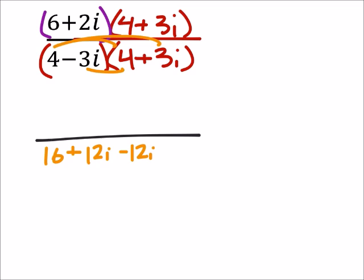You see how those two middle terms, again, from the conjugate, it's going to cancel those two middle terms. Then I've got negative 3i times a positive 3i, that would be a negative 9i squared.